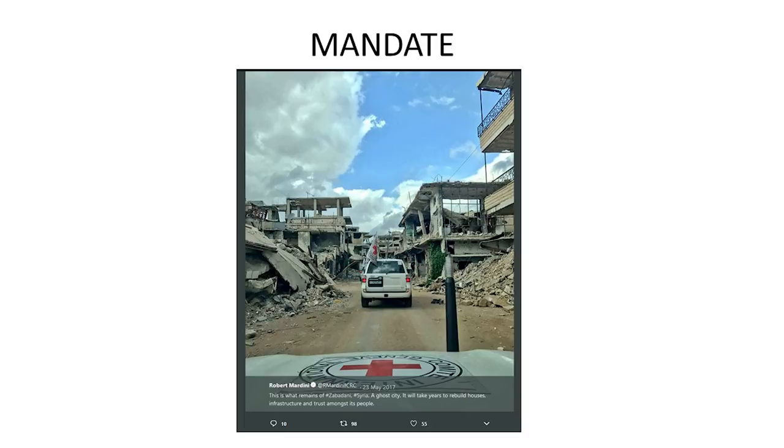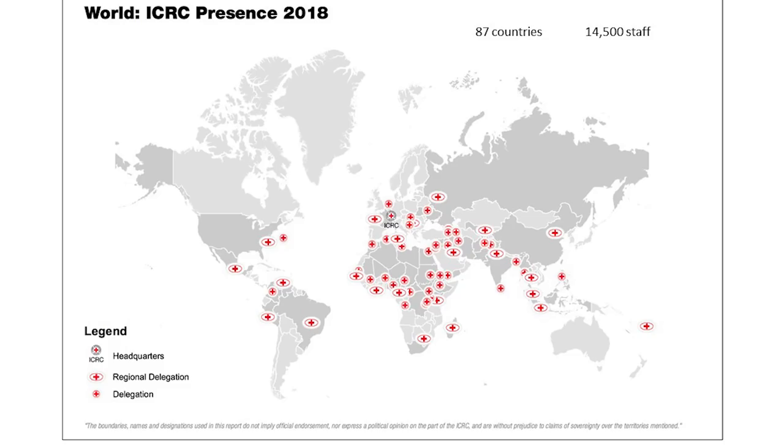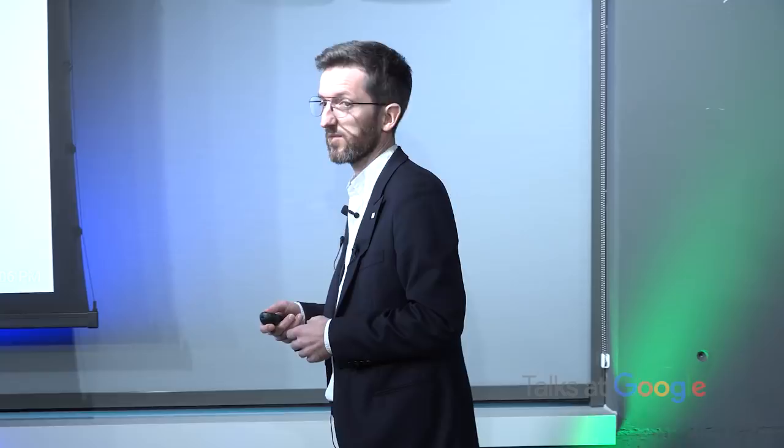What is the International Committee of the Red Cross? We're a neutral, independent, and impartial humanitarian organization. We work to assist and protect victims of armed conflict and other situations of violence around the world. This is where we work - wherever there's armed conflict, you'll find us. We're in about 87 countries, over 14,500 staff, predominantly where there's armed conflict, but we're also in capitals around the world for humanitarian diplomacy and preventive work.